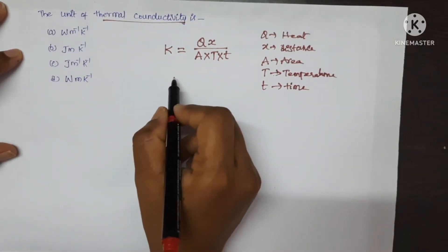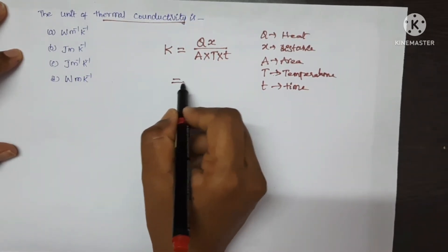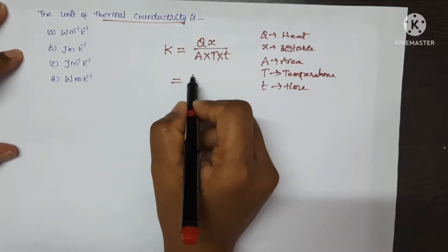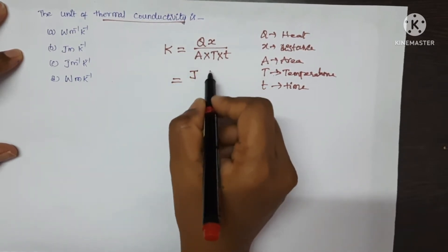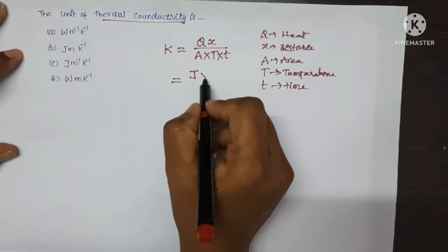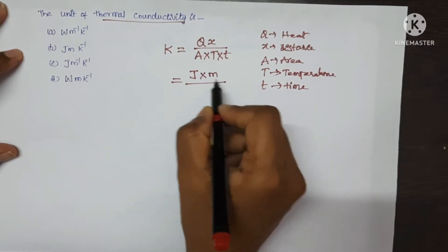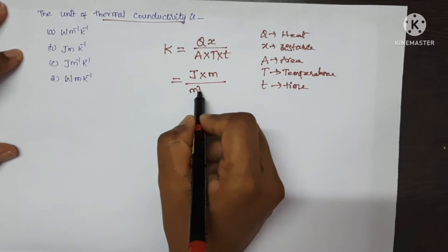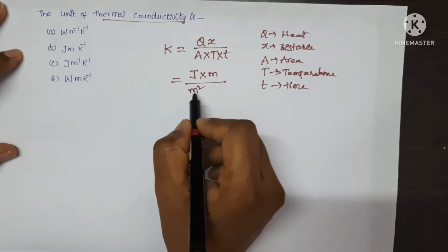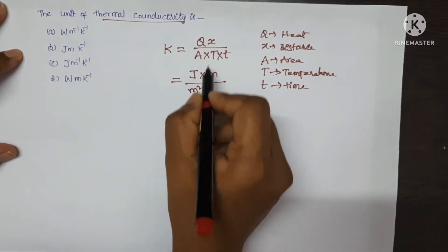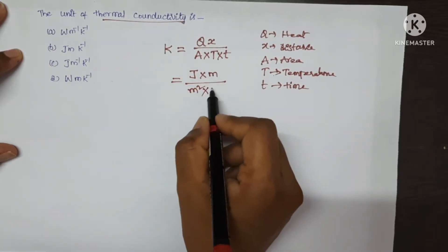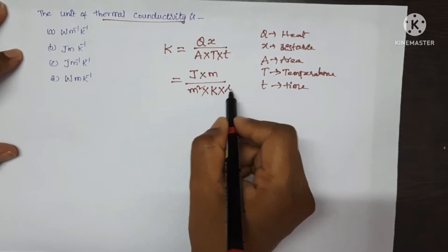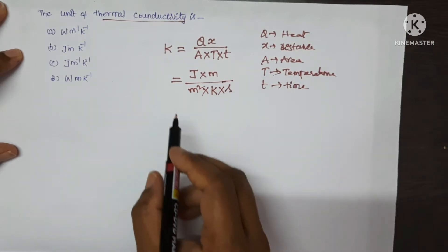Now let us write the SI units for each term. Q is heat energy, so Joule. X is distance, so meter. Area of cross section is meter square. T is temperature, Kelvin. Time is second.